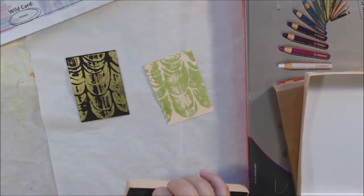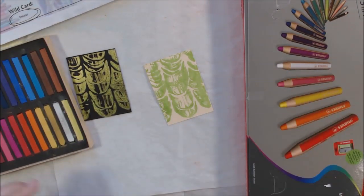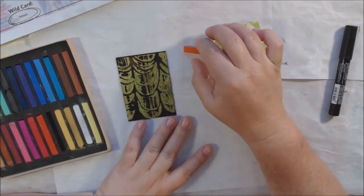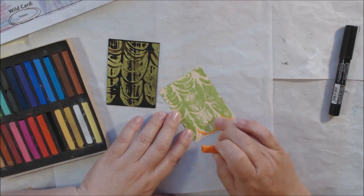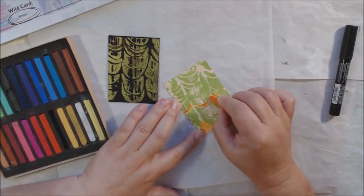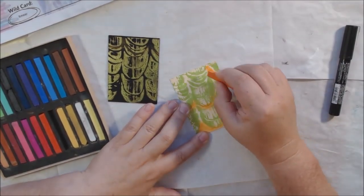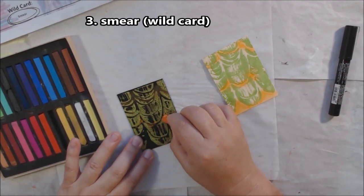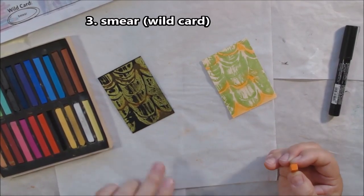That's prompt number two. Now prompt number three was fish. I'm tired of fish—I've been doing fish all month. Fish is everywhere, so I decided to use the wild card which is smear. The wild card prompt is drawn randomly so you can replace something you don't want to use.